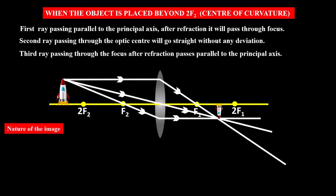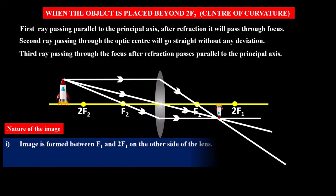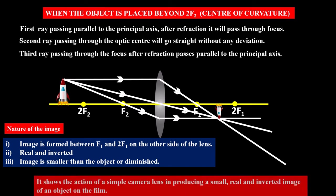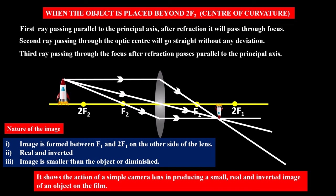The image is formed between f1 and 2f1 on the other side of the lens. It is a real and inverted image, and the image is smaller than the object — a diminished image. This shows the action of a simple camera lens in producing a small real and inverted image of an object on the film.